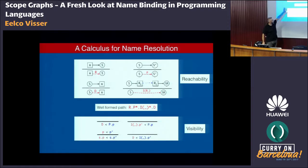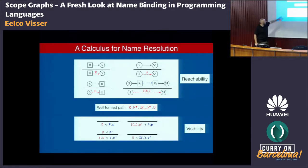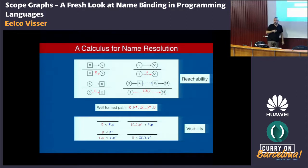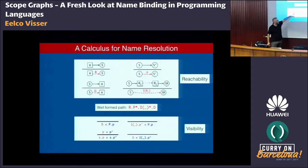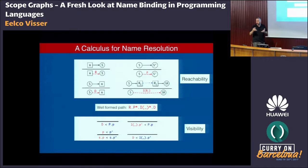The basic idea of the resolution calculus is: we have reachability, which allows us to find paths in a scope graph from references to declarations. We have a well-formedness predicate, a regular expression on the labels of paths, that allows us to forbid or allow particular patterns. And we have a specificity ordering on paths that lets us choose between paths and define shadowing policies.